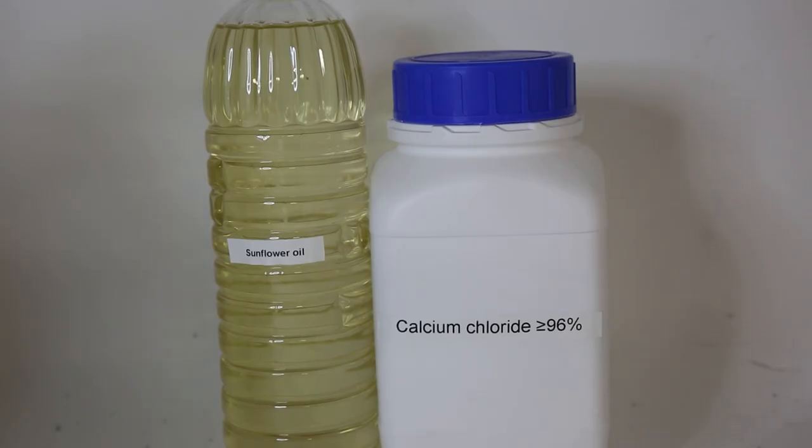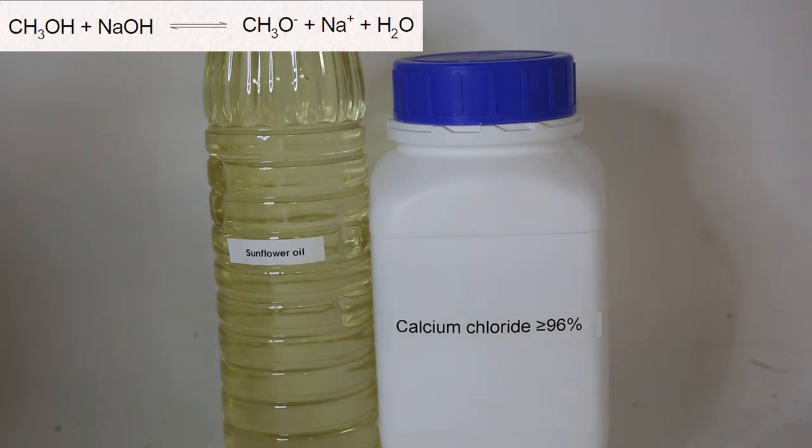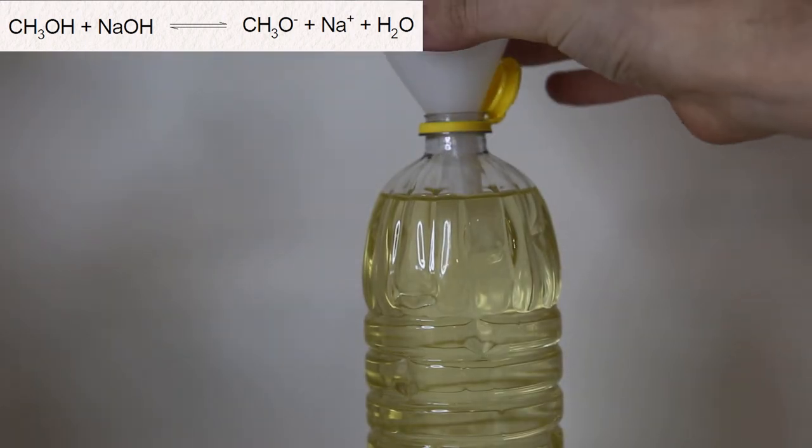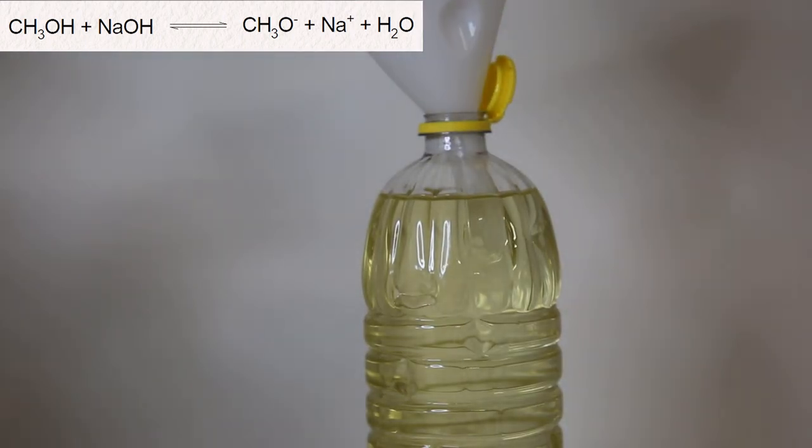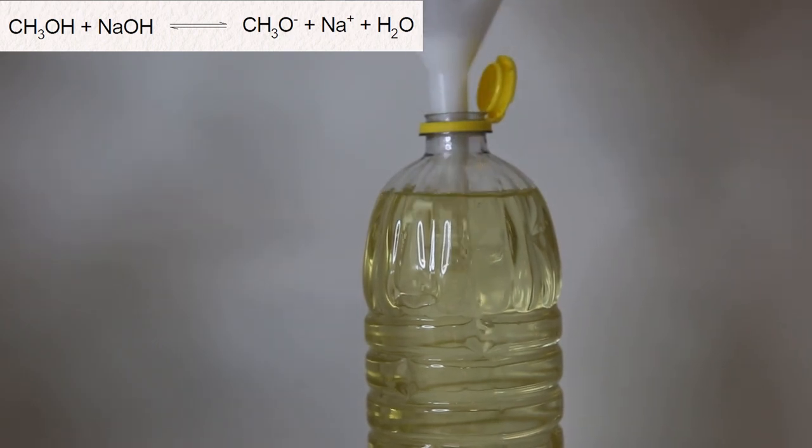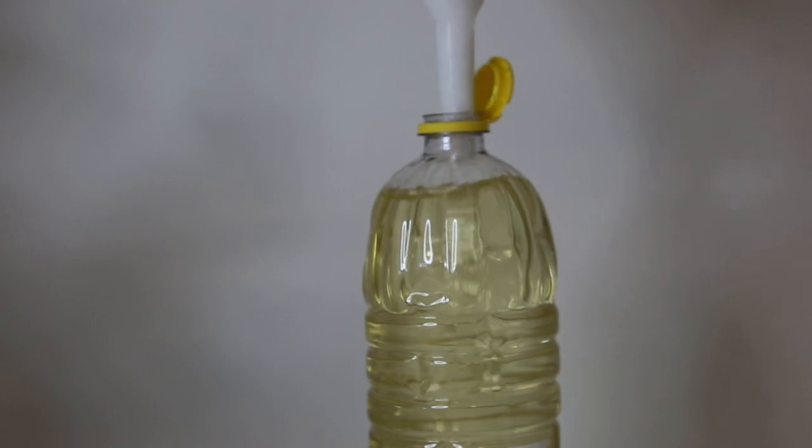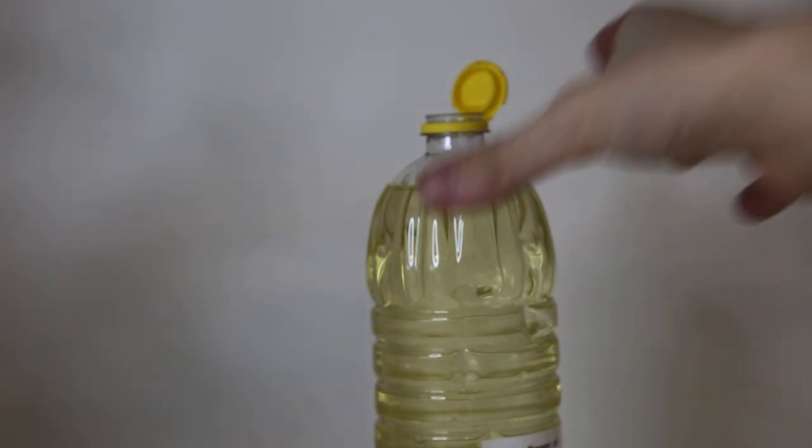So to get started, I will dry the sunflower oil with some calcium chloride. As we have seen, the reaction is in equilibrium with water on the right side. If there is too much water present in the mixture, the equilibrium will start favoring the left side, which will mean there are less methoxide ions, which will decrease the efficiency of the reaction. So removing as much water from the reactants as possible will prevent it from slowing down the reaction. I am not sure what the water content of the sunflower oil is, but I am doing it just in case.